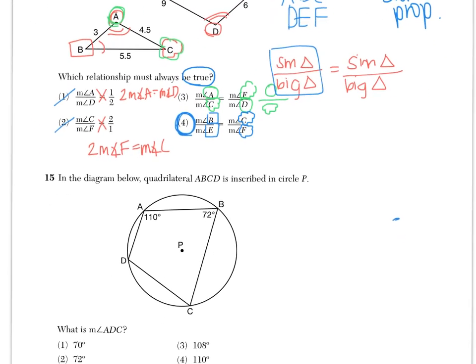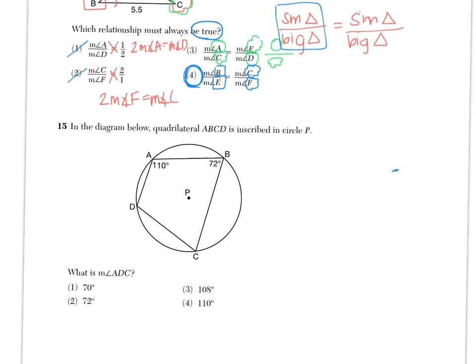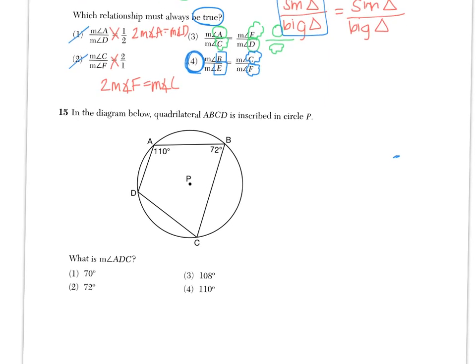Number 15 says, in the diagram below, quadrilateral ABCD is inscribed in circle P. What is the measure of angle ADC? So A to D to C, that's right here. I'm going to choose to call it X because I don't know yet what it is.